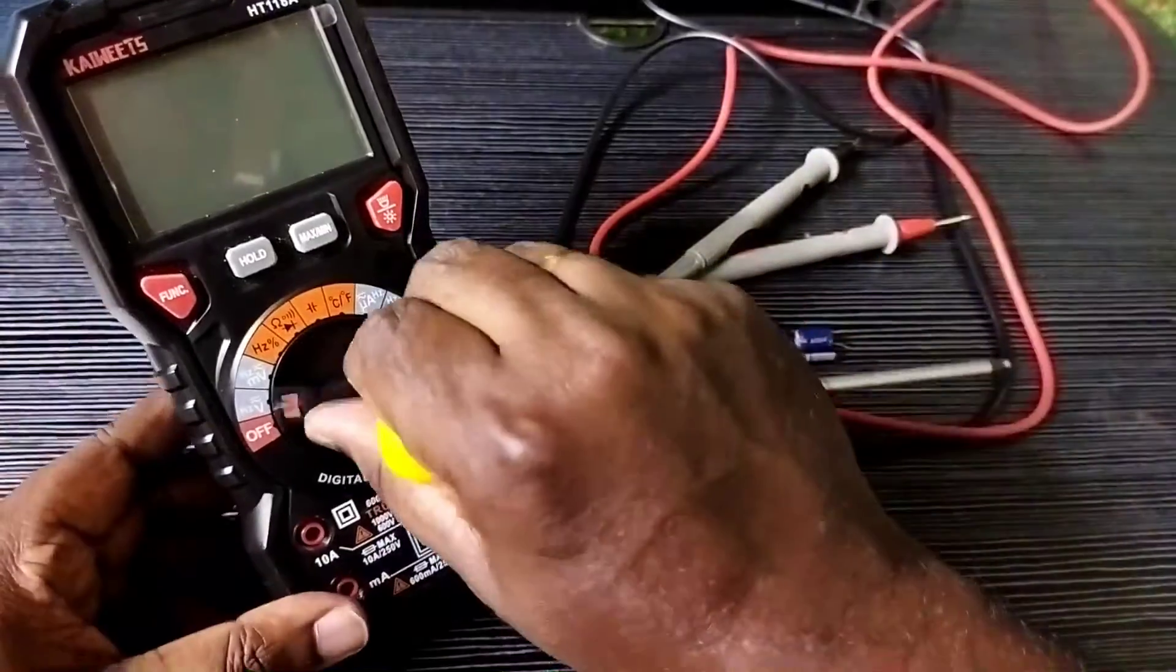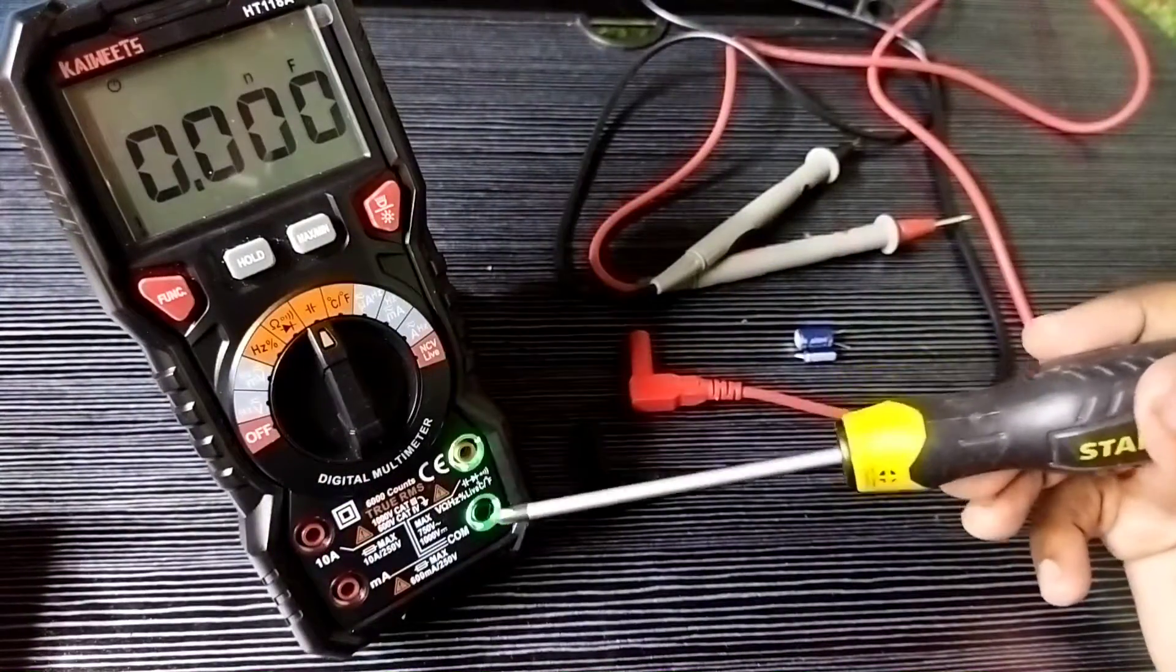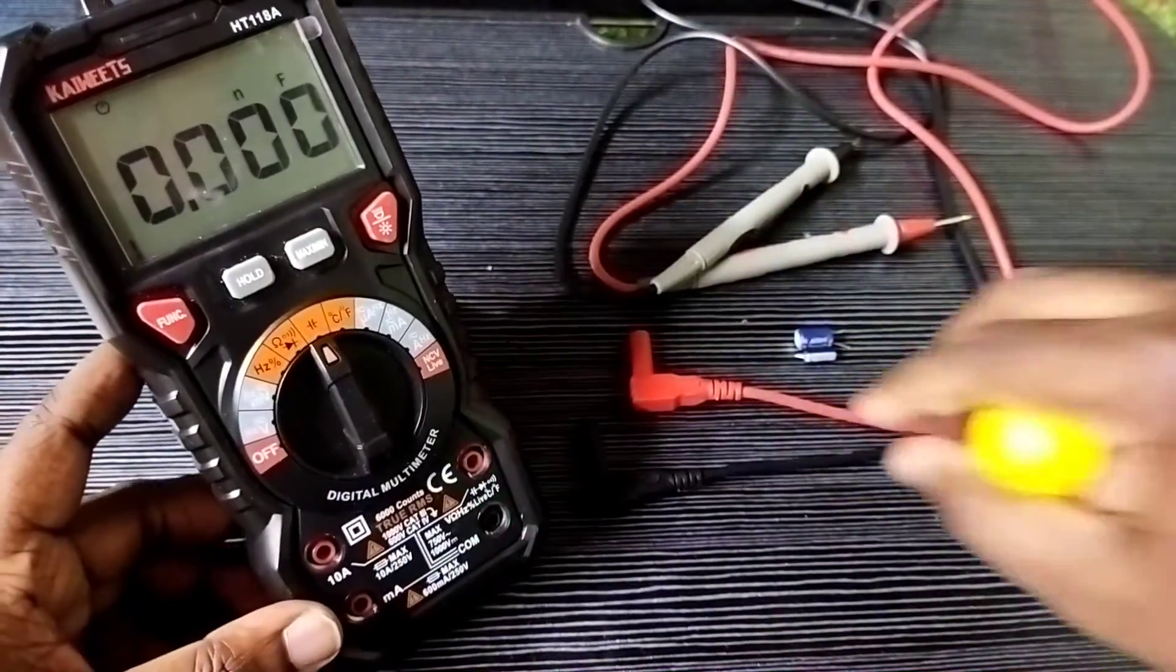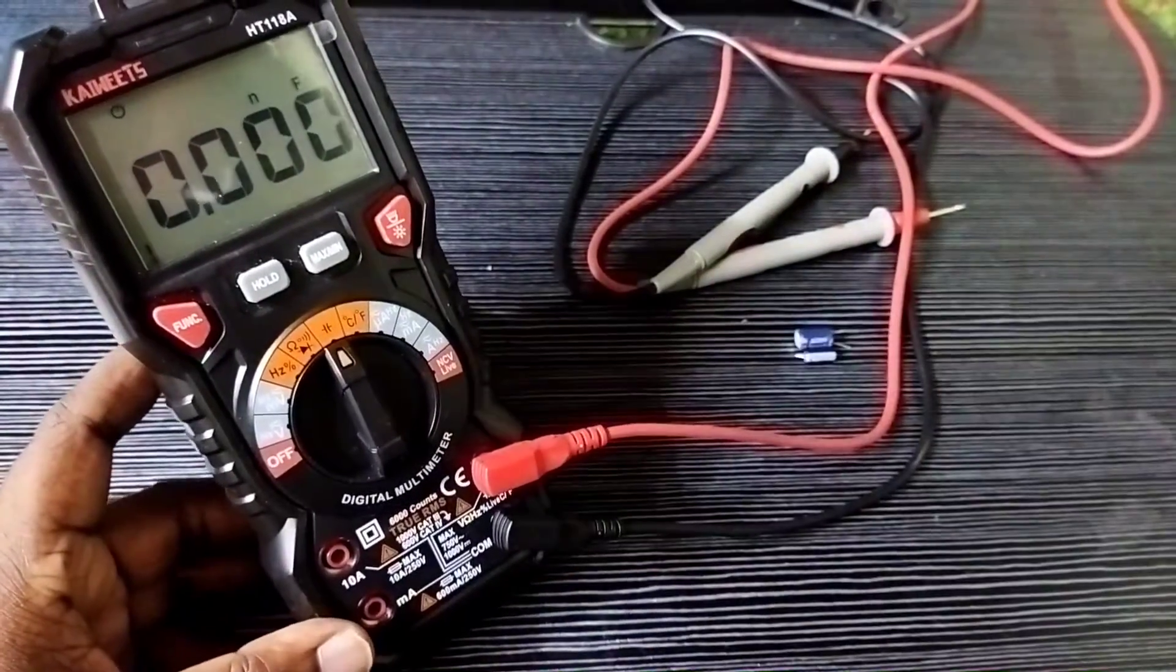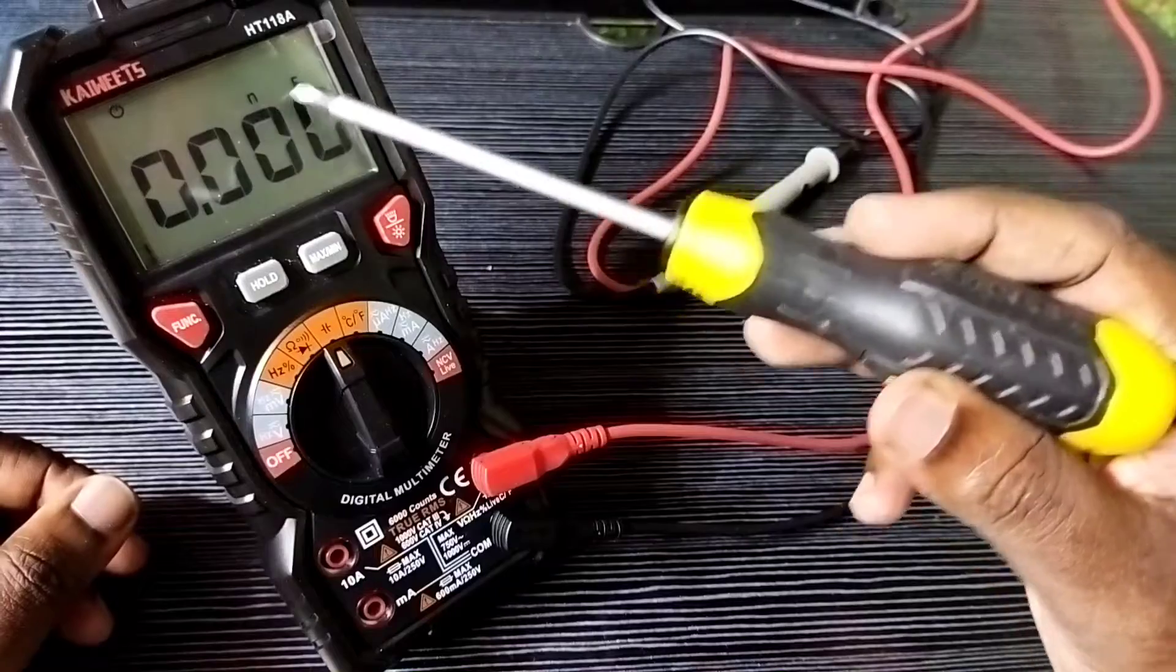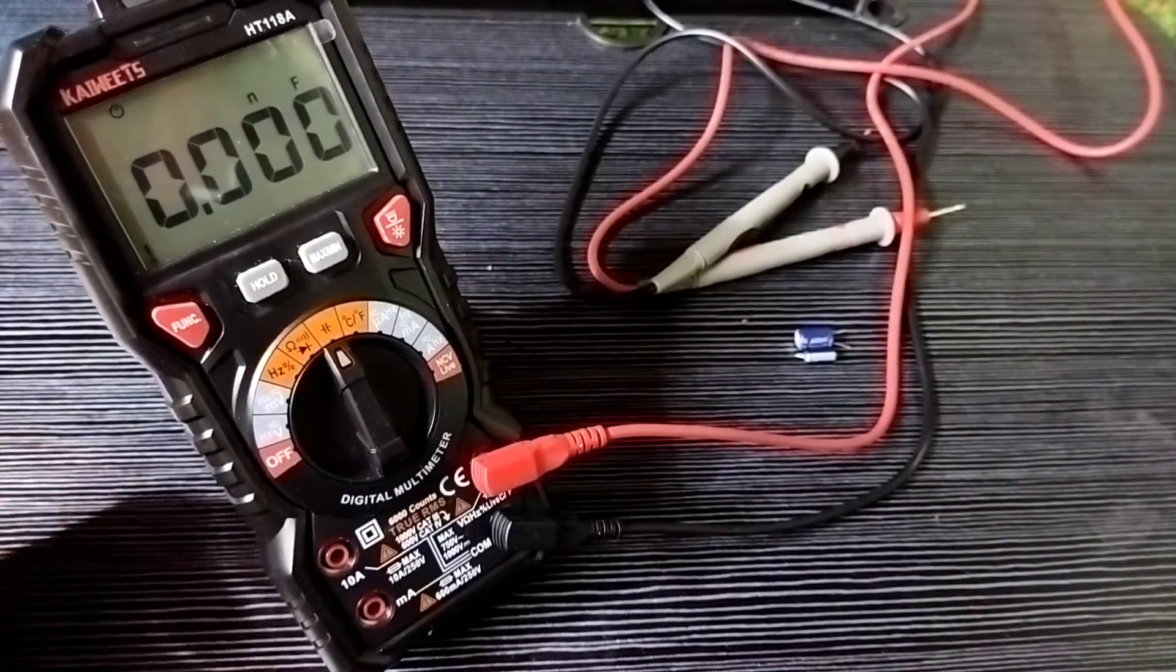First we need to select this function using the rotary switch. Then we need to connect the test cables. Red cable to V terminal, black cable to COM terminal. Here we can see the measurement.